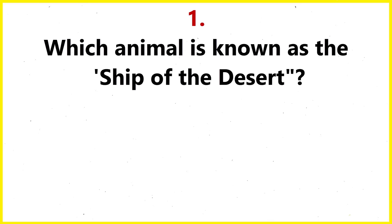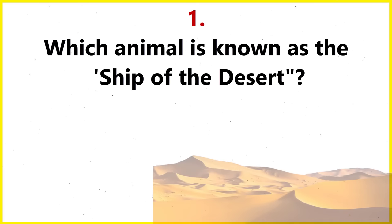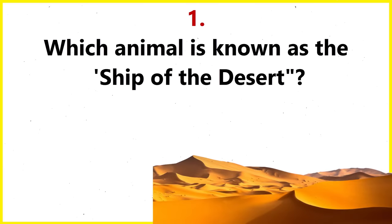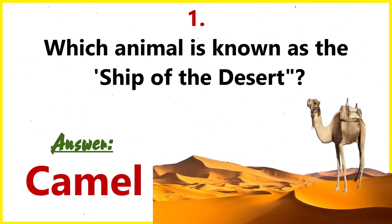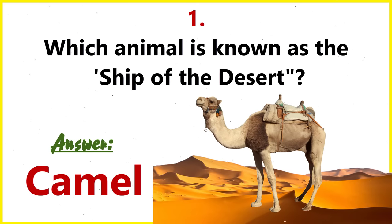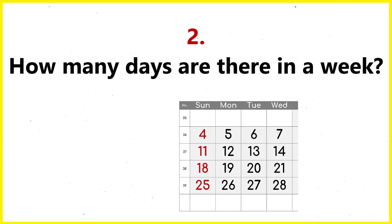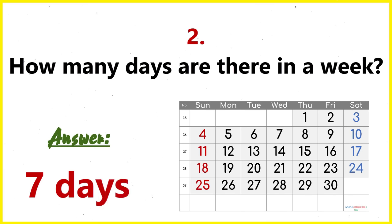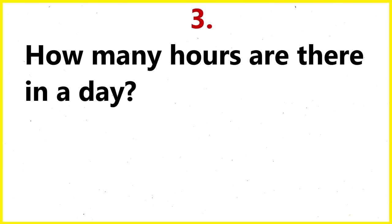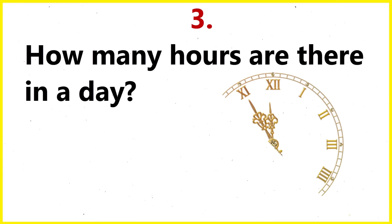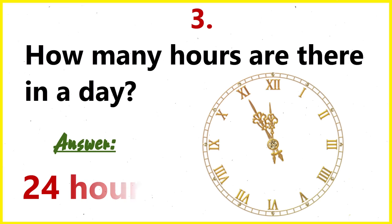Which animal is known as sheep of the desert? Camel. How many days are there in a week? 7 days. How many hours are there in a day? 24 hours.